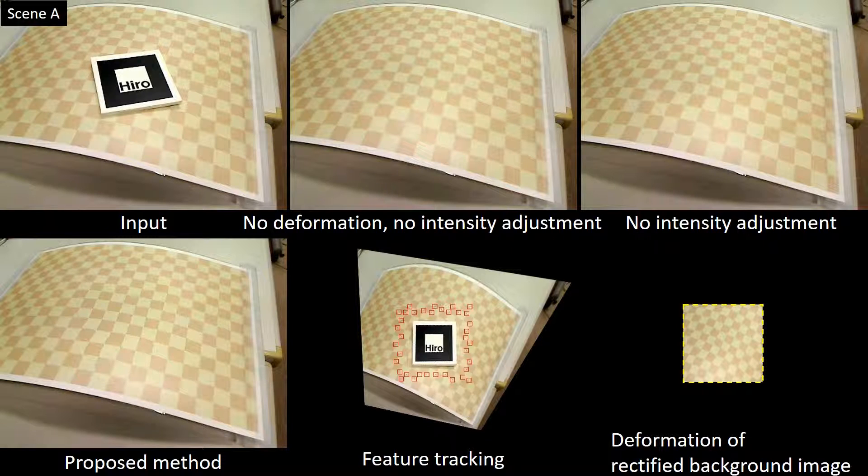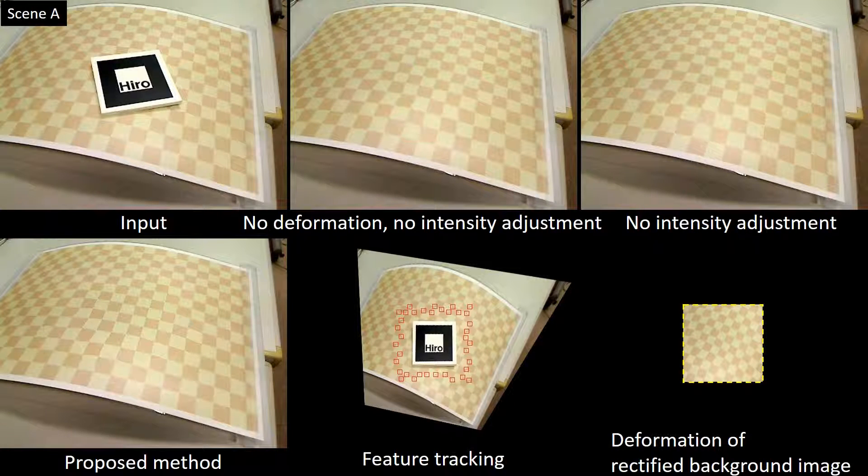The top row shows input frames and AR marker hiding results achieved using the baseline approach, which just uses homography, as well as our method without intensity adjustment. The bottom row shows results achieved using our full method, the rectified frames with tracked feature points, and the rectified background image, deformed according to the tracked feature points.